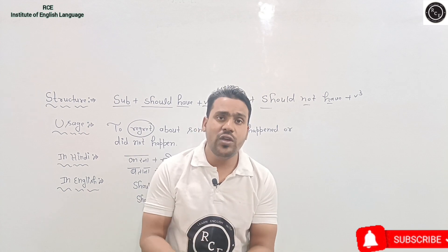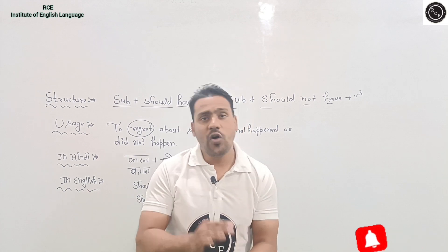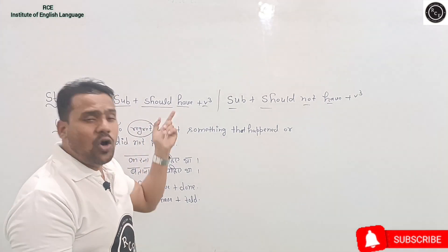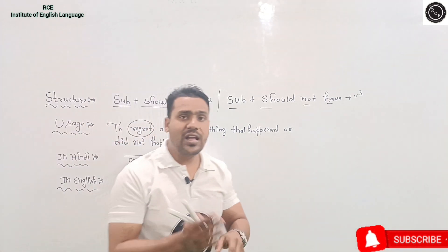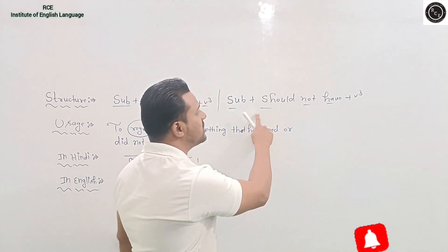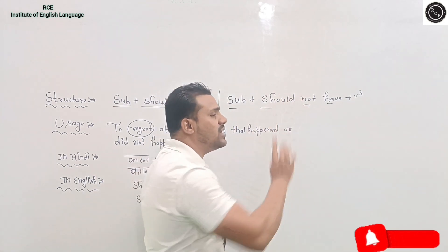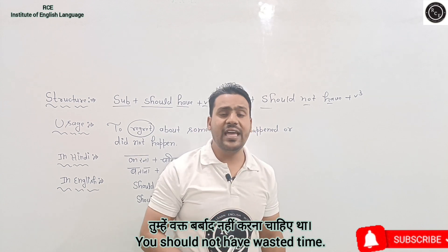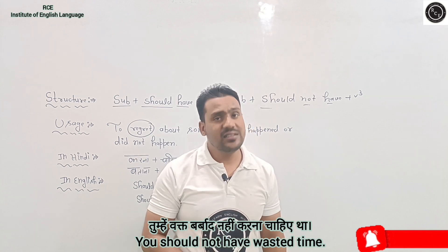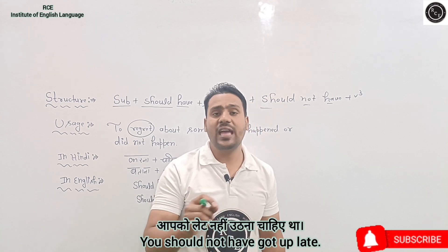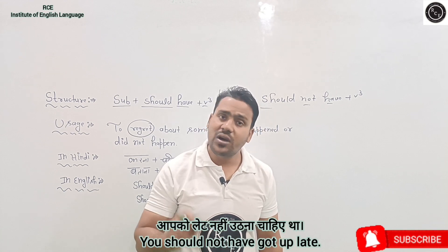So when we should not have done something but we did it, we use 'should not have.' For example: tumhe waqt barbad nahi karna chahiye tha — you should not have wasted time. Aapko late nahi uthna chahiye tha — you should not have got up late.